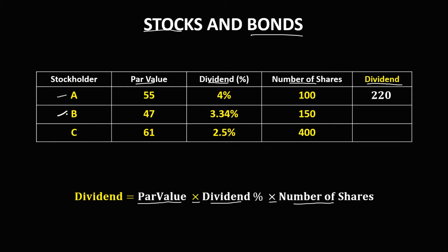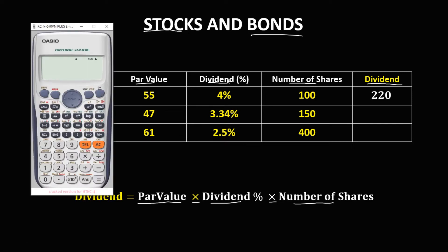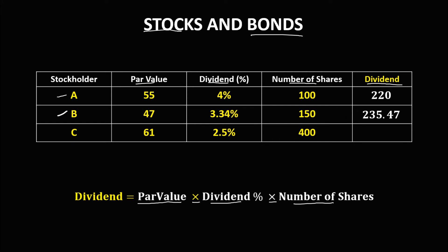For Stockholder B, the dividend percentage is 3.34%. Convert 3.34 to decimal by dividing by 100, then multiply by the par value of 47, then by the number of shares, which is 150. So the dividend for Stockholder B is 235.47.